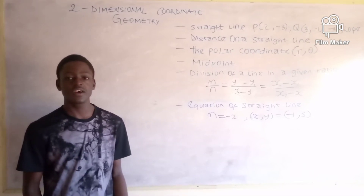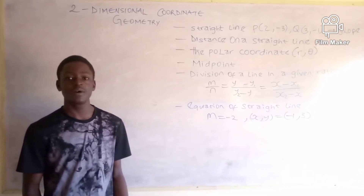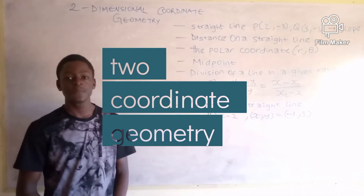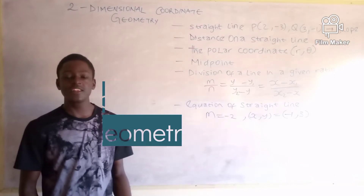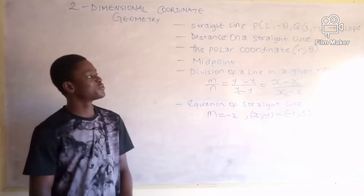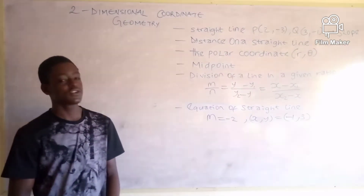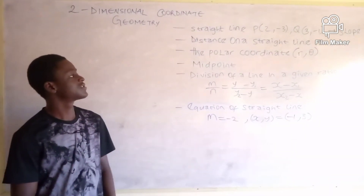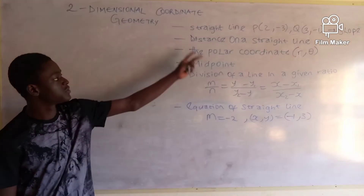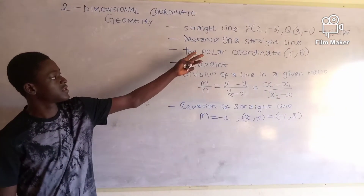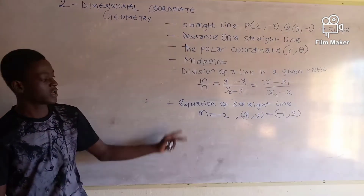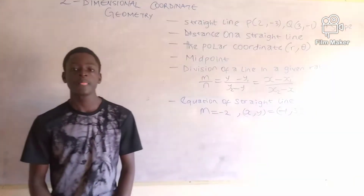In today's tutorial we'll be talking about two-dimensional coordinate geometry. When dealing with 2D coordinate geometry, we'll be focusing on straight lines — covering straight line distance, polar coordinates, and related topics.